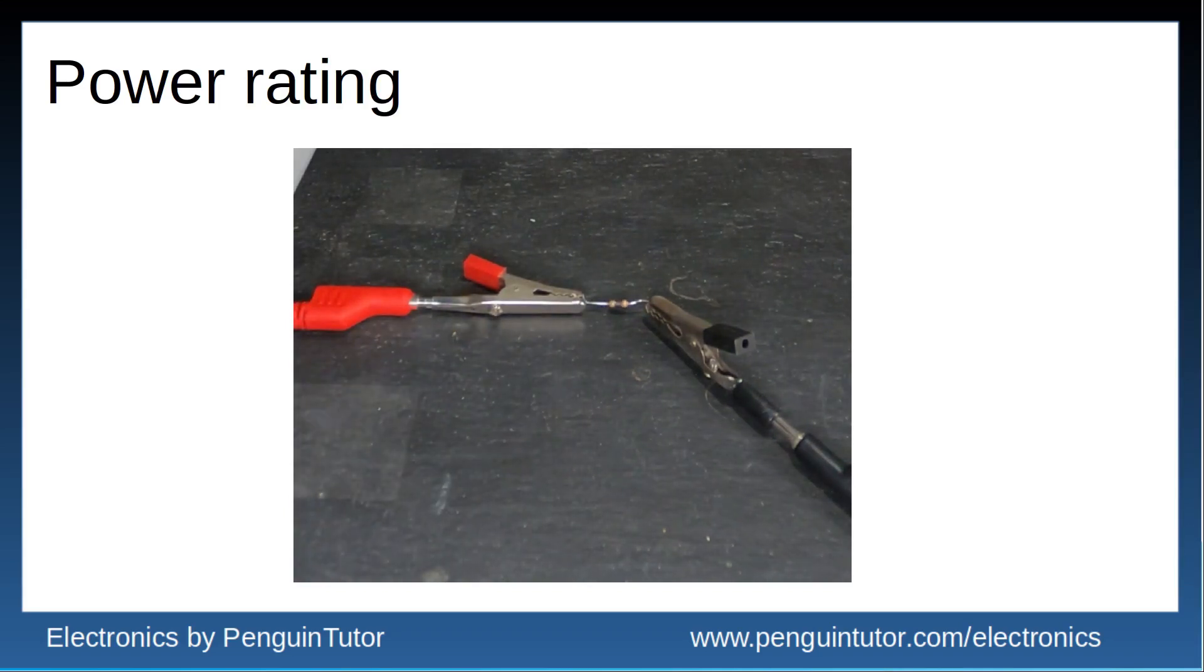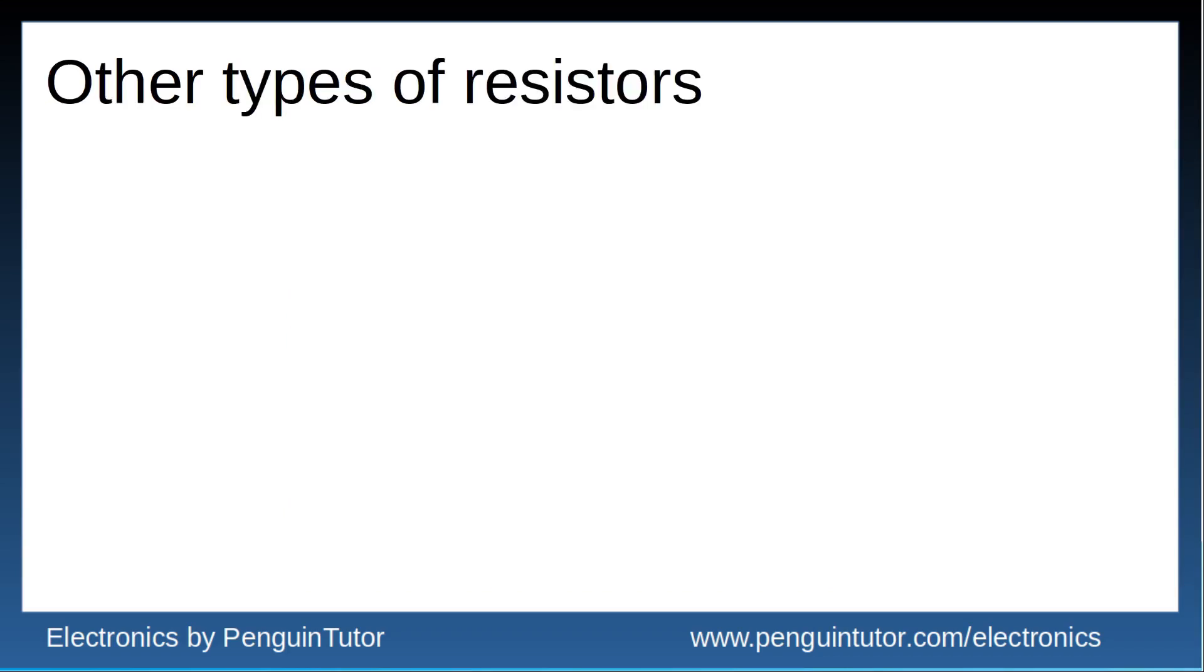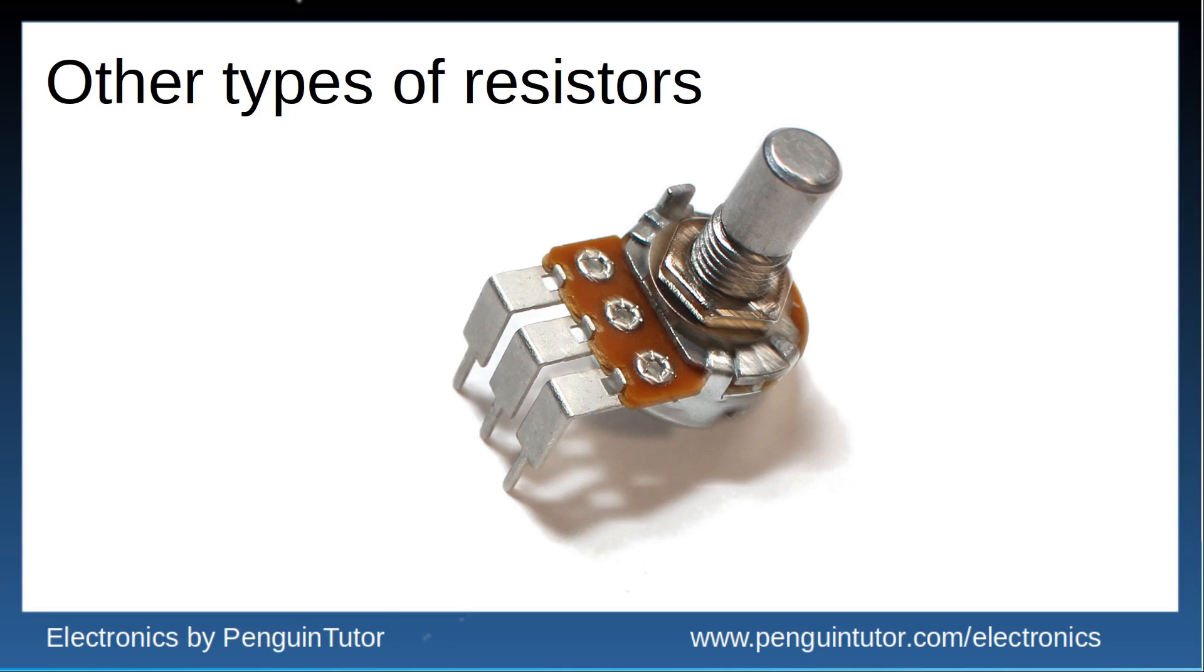This video has been based on fixed value resistors but there are other resistors whose values change under certain conditions. A good example is a variable resistor or potentiometer. These have three pins and some kind of slider or rotor. The resistance across the outer pins is constant but as the wiper is moved the center terminal resistance is closer to one or the other. This allows the user to vary the resistance between the center pins and end pins.